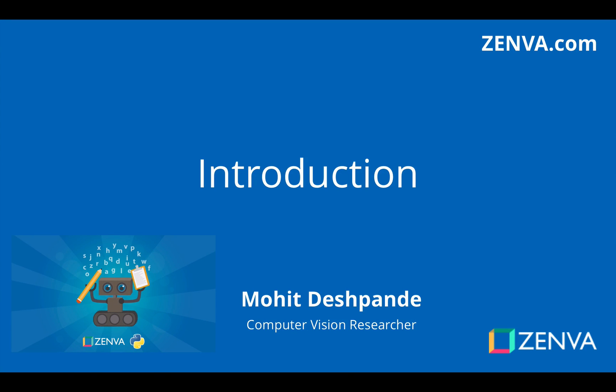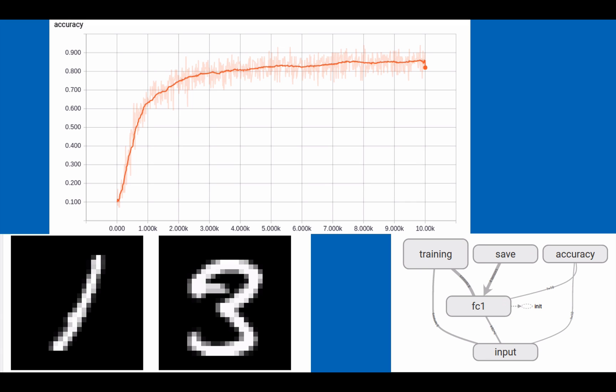Hello everybody, my name is Mohamed Desbande and thanks for joining me. In this course, we'll be building an artificial intelligence that can detect handwritten digits. Here are some of the examples shown below. For example, we can easily detect that this is an image of a 1 and the other one is an image of a 3.